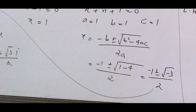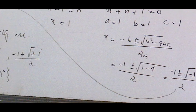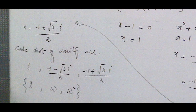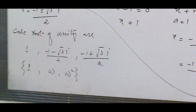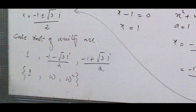At the end we get the values (-1 ± √(-3)) / 2. To remove the minus from the square root we use i (iota), so the cube roots of unity are: 1, (-1 - √3·i) / 2, and (-1 + √3·i) / 2. We name these values ω and ω².